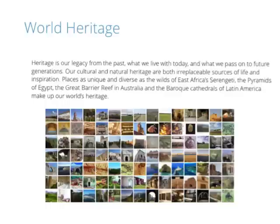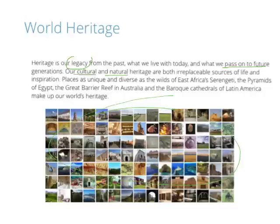Which brings us to one of the definitions that really encapsulates world heritage. I've taken this off the UNESCO page, along with a montage which covers a whole range of world heritage sites. The statement reads: 'It's a legacy from our past that we live with today. It's what we pass on to our future. It's cultural and it's natural. It's irreplaceable — places of unique and diverse...' Those words really capture what world heritage is, and give you an idea of how rare, unique and diverse some of the places we're going to be looking at truly are.